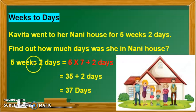Five weeks we have to multiply by seven to get the answer in days plus two days. So five sevens are thirty-five plus two. That is, Kavita was there for thirty-seven days in her nani's house.